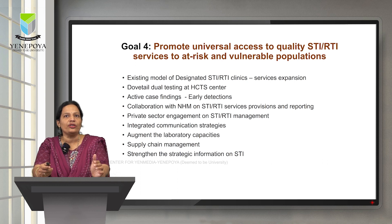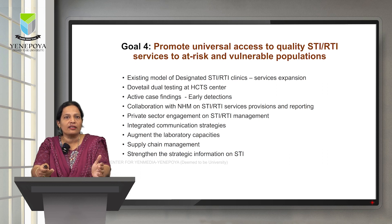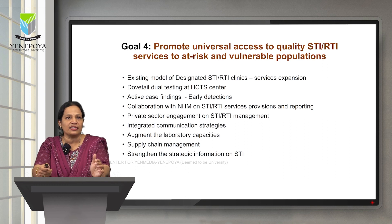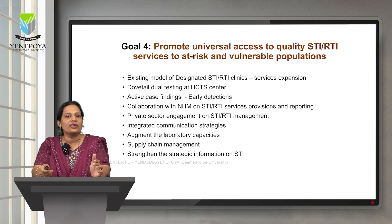Goal 4 — promote universal access to quality STI RTI services for at risk and vulnerable populations — strategies include: expand existing designated STI RTI clinics so both services are available in a single window; enable dual testing at HCTS centres; conduct active case finding for early detection and treatment initiation; collaborate with NHM on STI RTI services, provisions, and reporting; engage the private sector for management of STI RTI with capacity building; implement integrated communication strategies; augment laboratory capacities; ensure supply chain management so resources are available throughout; and strengthen strategic information on STI to plan appropriate interventions.